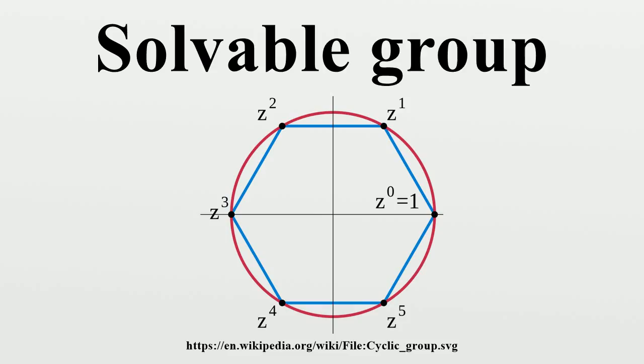The group S5 is not solvable. It has a composition series E, A5, S5, giving factor groups isomorphic to A5 and C2, and A5 is not abelian.